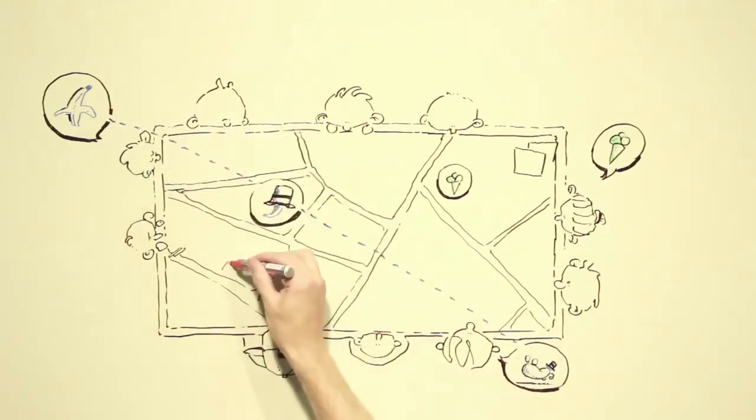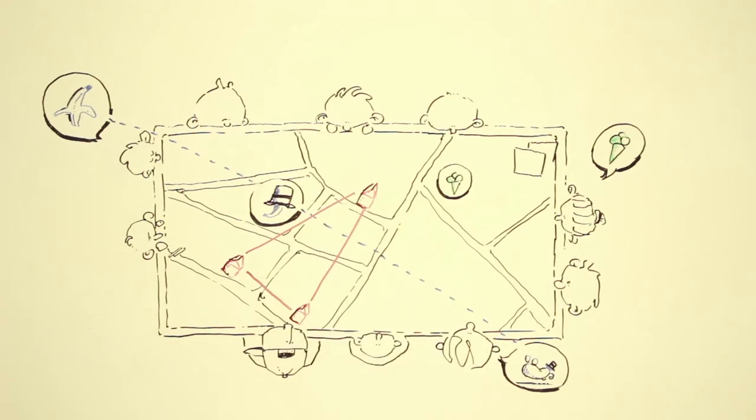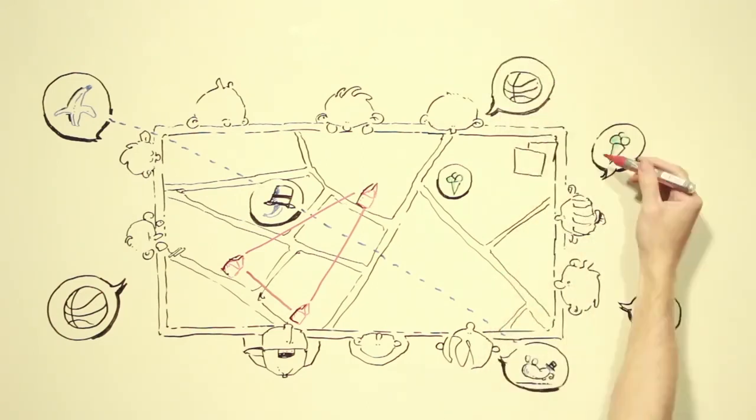Apart from that, the map can help us to discover commonalities. Perhaps, it never occurred to us how close we live to each other or that we have very similar interests. Based on these commonalities, we can organize ourselves and become active together.